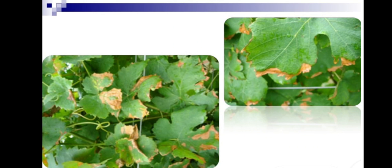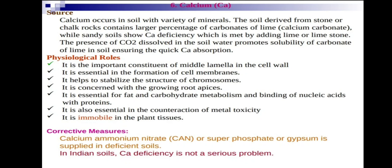The third secondary element is calcium. Calcium occurs in soil with a variety of minerals. Soils derived from stone or chalk rocks contain a larger percentage of calcium carbonate (lime). Sandy soils show calcium deficiency and need to be corrected by adding lime or limestone. The presence of CO2 dissolved in soil water promotes solubility of lime in soil.